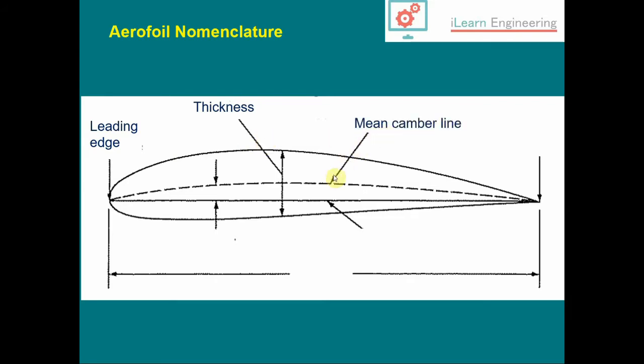Here we have a mean camber line. This is the line that goes from the leading edge to the trailing edge but is equidistant from the upper and lower surfaces. The chord line is a line that goes from the leading edge to the trailing edge, with a chord length often symbolized by lowercase c.